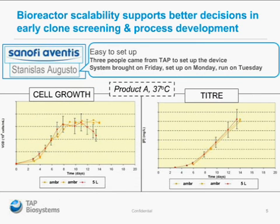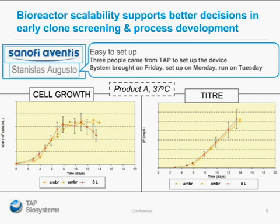This is an experiment I actually ran myself at Sanofi Aventis in Paris. We took the AMBA in on a demonstration and looked at running duplicate AMBA vessels in parallel against a five-litre Sartorius reactor running at the same time in a fed batch culture. The error bars shown are plus or minus 20% acceptance criteria on the system, and the AMBA did very well. Stanislas also said that it's easy to set up — three people from TAP came to set up the device. It was brought on Friday, set up on Monday, and run on Tuesday. It demonstrates that it's possible to drop the AMBA into your laboratory and get these kind of scalability results straight away.